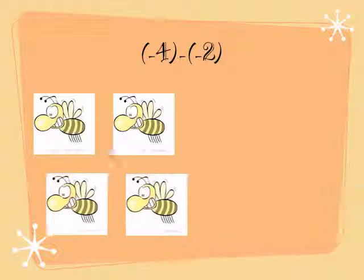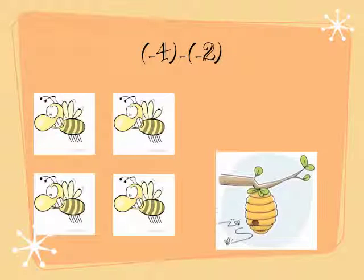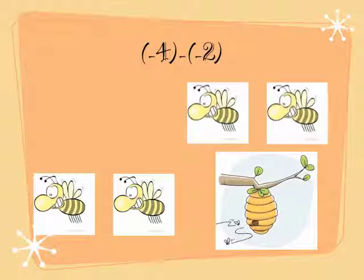Our third problem is negative 4 minus negative 2. In the garden, there are 4 bees at the start. But then 2 bees flew back to the hive. Therefore, there are 2 bees left in the garden.